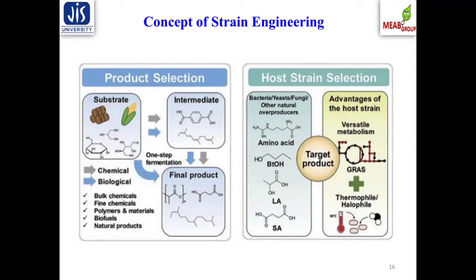For host selection — the most important concept in strain engineering — if you are trying to produce ethanol or propanol, you must ensure your host strain has a high level of tolerance to sustain a high concentration of the target molecule. If your host strain has high tolerance for your target product, it will be a versatile strain and definitely the most suitable chassis strain for your application.